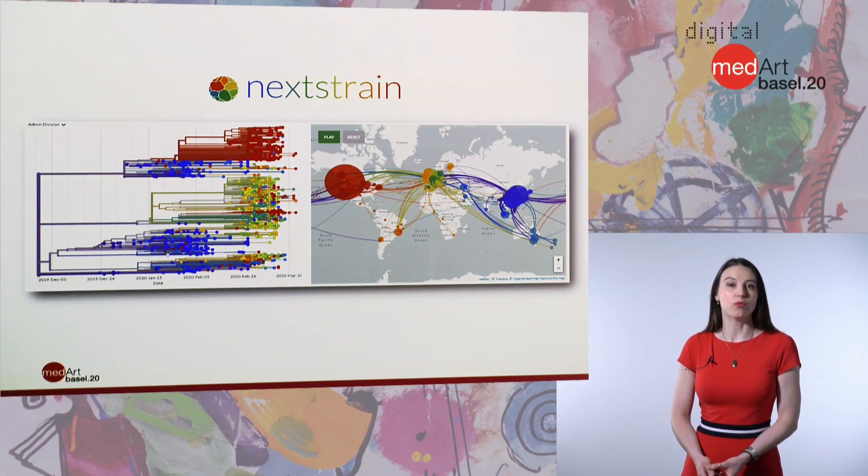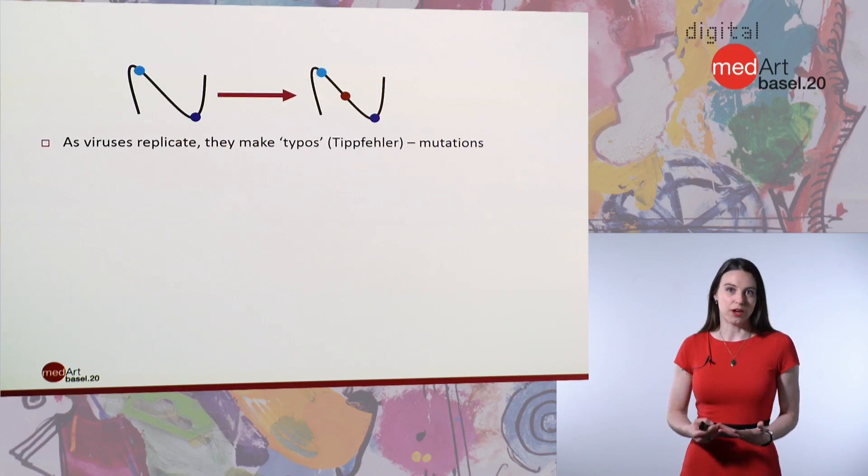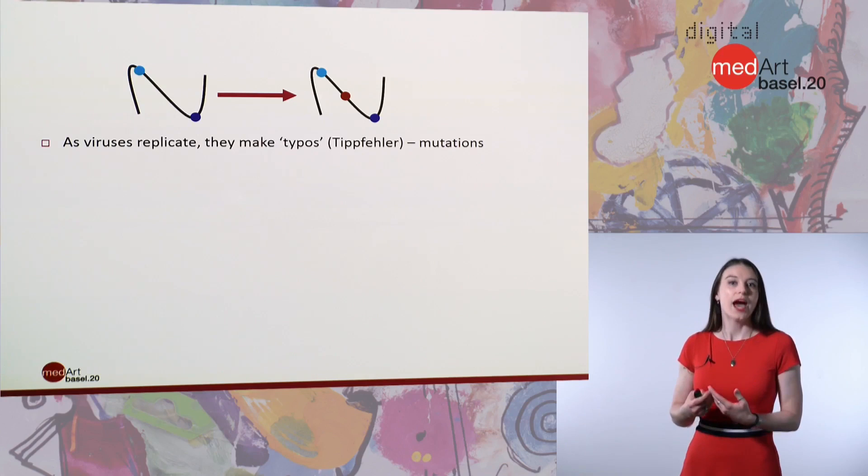We do this through phylogenetics, which essentially means that we take advantage of the small mistakes the virus makes when it replicates. When the virus infects someone, it has to copy itself many times, and inevitably it makes mistakes when it does this. These mistakes usually don't affect how the virus functions. However, we can use these to see how different samples differ from each other.